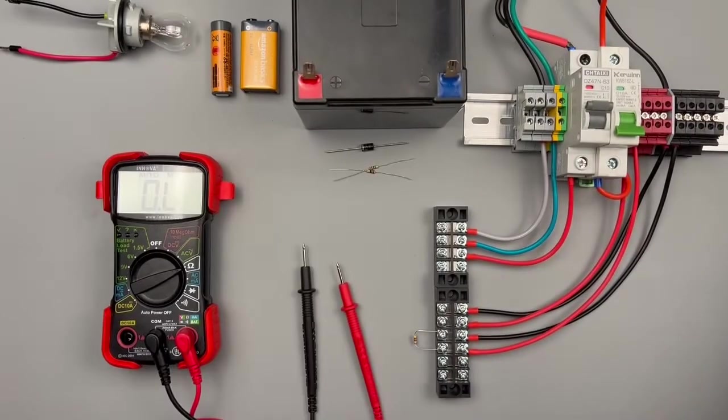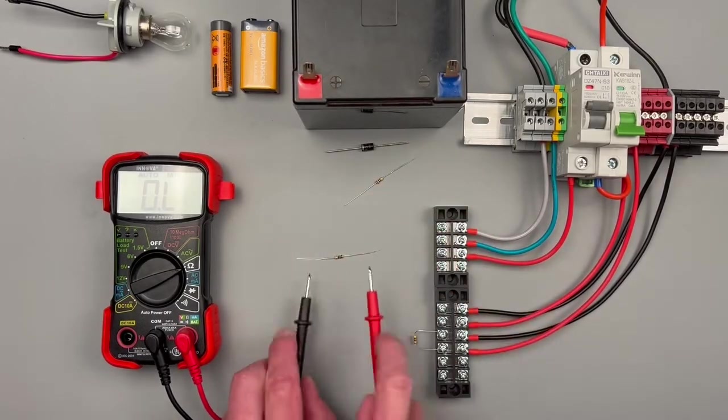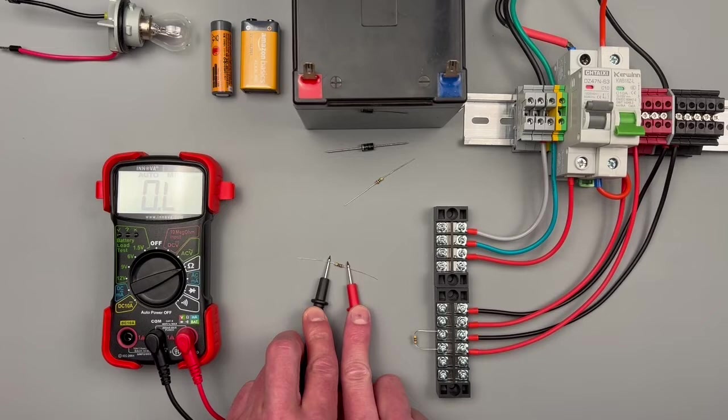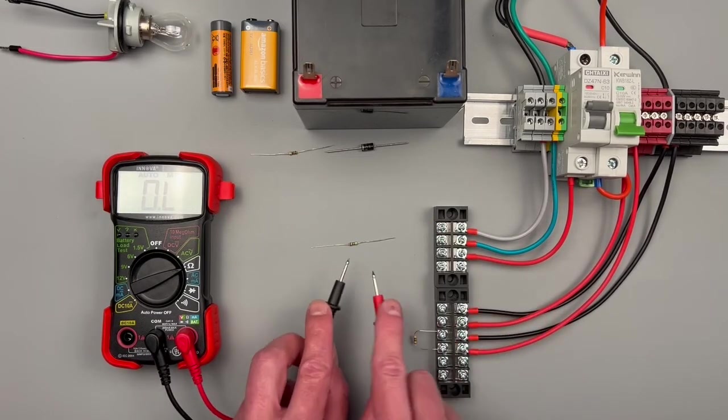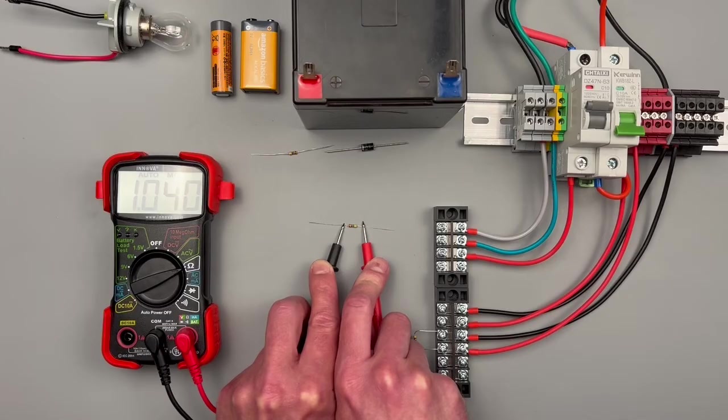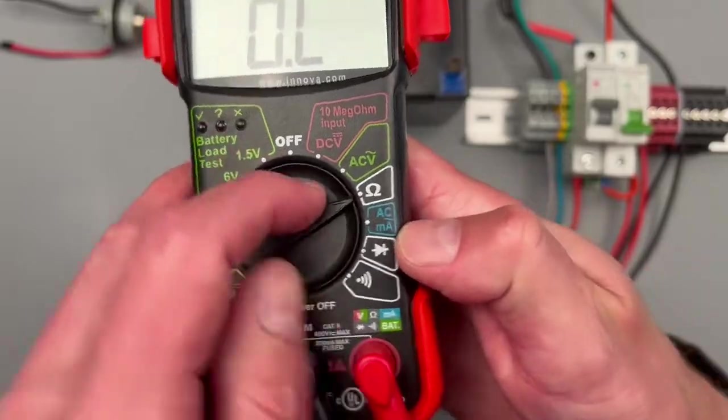Next is ohms or resistance. I've got some resistors here. I do like that it's an auto-ranging meter, that is rare for this price point. This is a 10 ohm resistor. This one is one mega ohm, so I think that tracks.